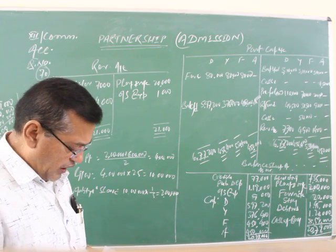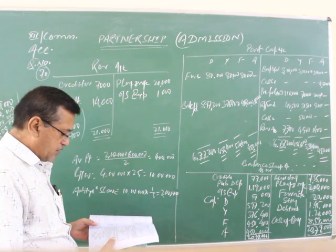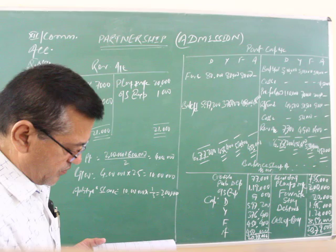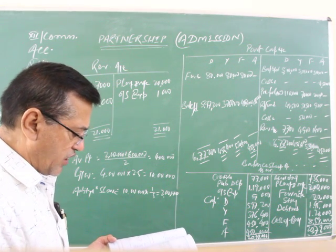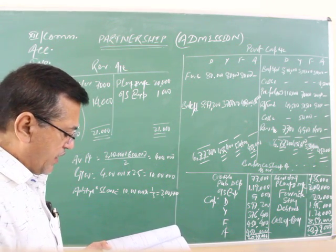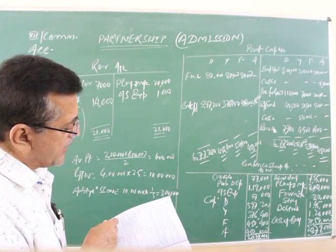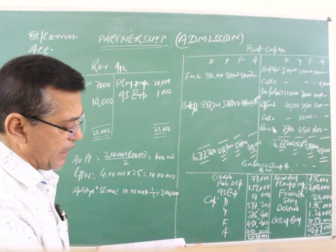Good question. In this question, there are three partners: Dibya, Yassim and Fatima. Their profits in this ratio are already given. And Adit is admitted for 4,50,000 capital.